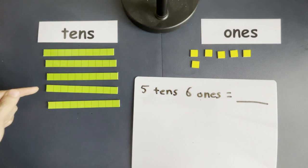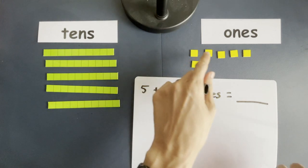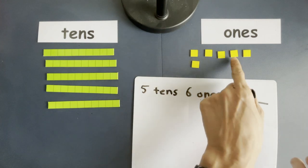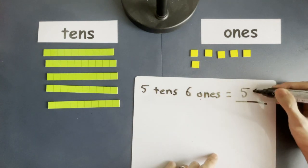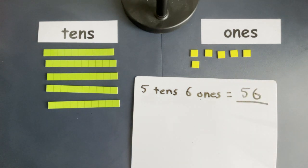Ten, twenty, thirty, forty, fifty, fifty-one, fifty-two, fifty-three, fifty-four, fifty-five, fifty-six. So, if you got this answer, well done. And now, I want you to try it on your own.